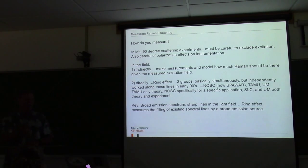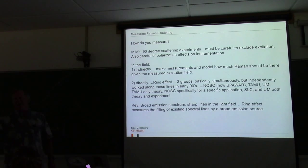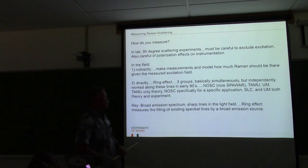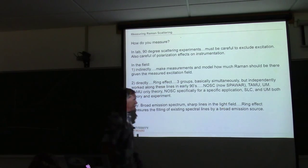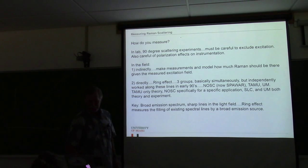I was sitting daydreaming in an AGU meeting, thinking about how I could measure Raman scattering in the field, and I thought: solar Fraunhofer lines — I could see the change in those lines. So I went on my faculty position interview trips and told the optical expert Joe Hirschberg my idea, and he said 'That's the ring effect.' Turns out astronomers had used it for years. Anyway, it wasn't that original, but we started looking at it experimentally to separate elastic from inelastic components in the light field.